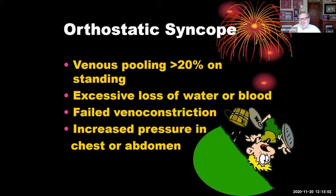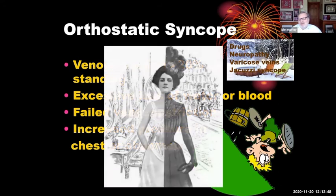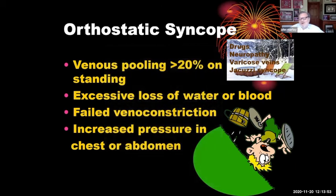Orthostatic syncope involves venous pooling of greater than 20 percent on standing. It's commonly due to excessive loss of water or blood, failed venous constriction, or increased pressure in chest or abdomen. The easiest way to assess it in a physician's office is to have them lie down or sit and then stand, monitoring blood pressure and pulse rate. Some venous pooling causes are interesting — drugs, neuropathy, varicose veins, as well as the jacuzzi can cause venous pooling. Very tight clothing around the stomach can cause failure of blood to get back to the heart.